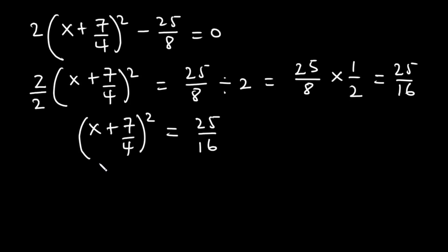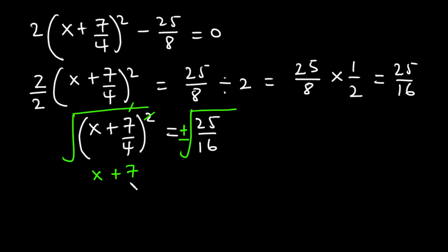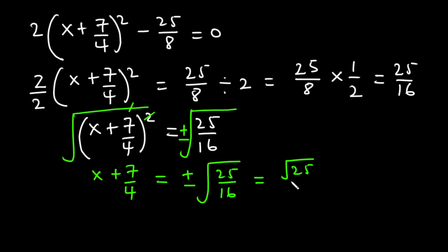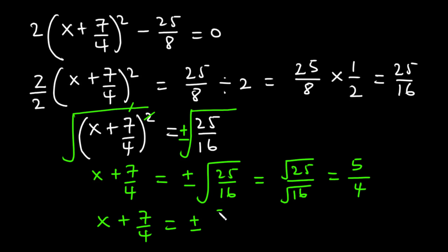To remove the exponent, we introduce square roots on both sides. So x + 7/4 = ±√(25/16). The square root of 25/16 equals √25 divided by √16. Since √25 = 5 and √16 = 4, we get x + 7/4 = ±5/4.